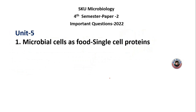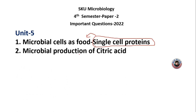Coming to unit 5: microbial cells as a food, especially single cell proteins, are very important to use as microbial food. The second important question is the microbial production of citric acid.